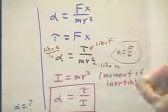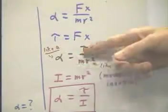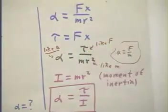If the torque is f times x, then we can say that alpha is torque over mr squared.